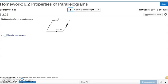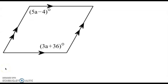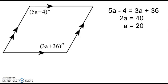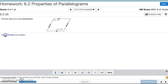Number nine. Find the value of A in the parallelogram. In the parallelogram, opposite angles are equal to each other. So we set those two expressions equal to each other, and we solve for A. So we subtract 3A from both sides, and add 4 to both sides, and we get 2A equals 40. Divide both sides by 2, and you get A equals 20. That's number nine.